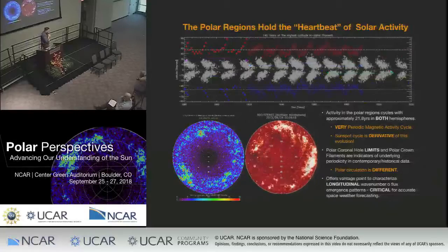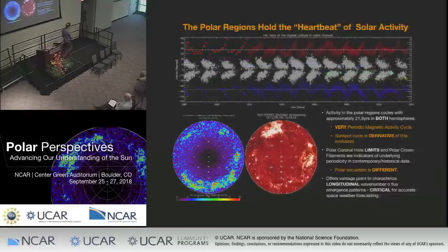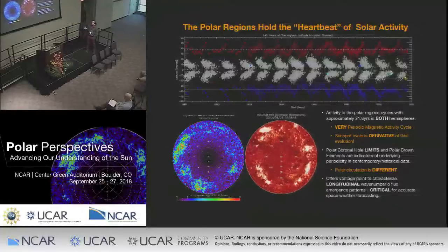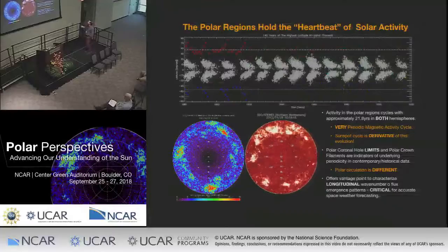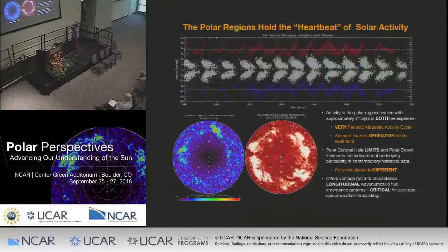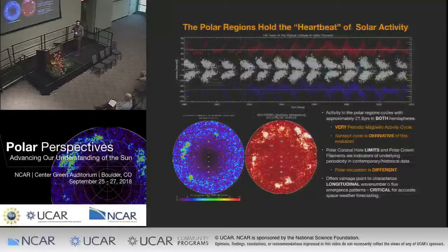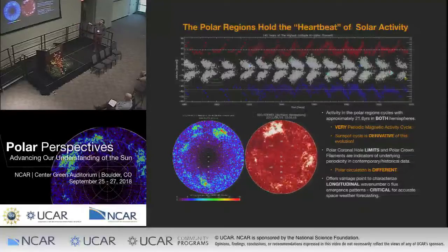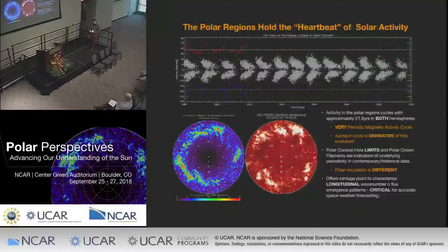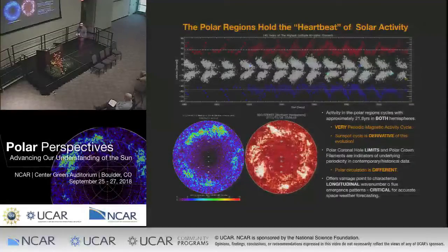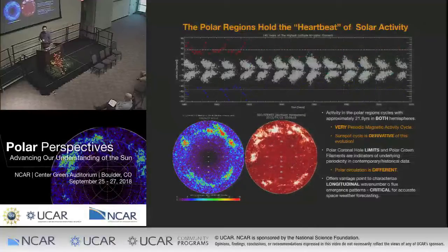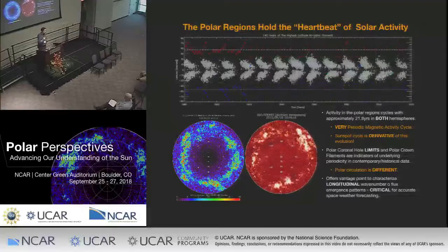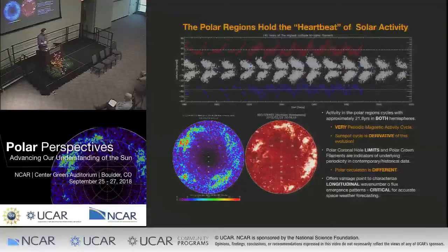If you put it in context with the butterfly diagram, you can join all the dots. But there are two things to notice: the butterfly wings that start at mid-latitudes before they start migrating to the equator, and the initial motion of the polar crown filament to the poles, are synchronized. Something is synchronizing them. Not just once, but for 14 cycles. Something is happening.